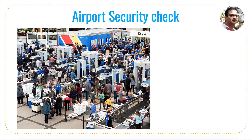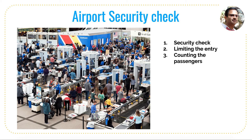The next thing it does is limit the entry of passengers into the airport. If there is a lot of crowd, we can limit the number of passengers getting in and divert them to another security queue. If you want to count the number of customers getting into the airport, you can use this as an entry point to figure out how many passengers are getting through. The API gateway also does the same — it counts how many requests are coming into the backend services.